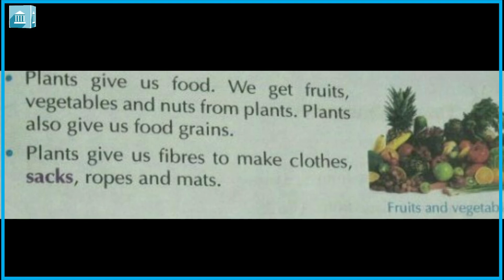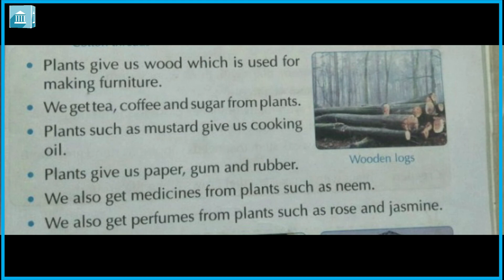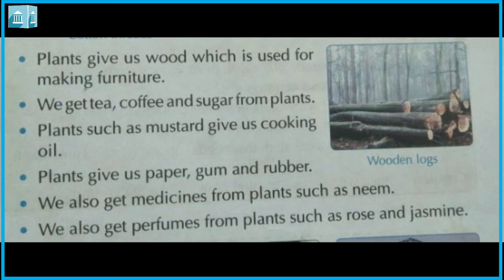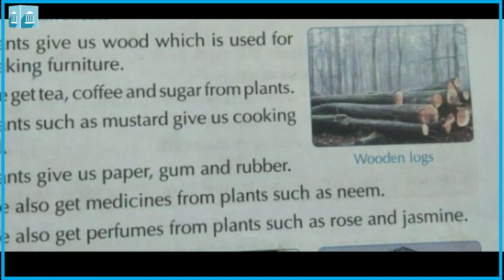Plants also give us food grains. Plants give us fibers to make clothes, sacks, ropes and mats. Plants give us wood which is used for making furniture. We get tea, coffee and sugar from plants. Plants such as mustard give us cooking oil. We also get pepper, gum, rubber and medicines from plants such as neem. We also get perfumes from plants such as rose and jasmine.